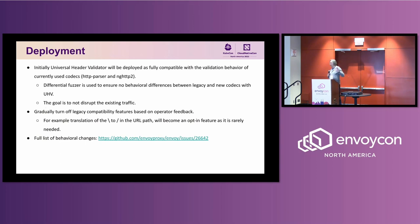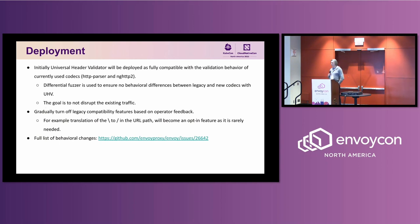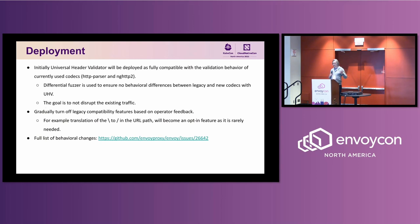We don't want to stay in that compatibility mode forever. Our goal is to move into a better, consistent, more compliant world. We'll start to turn off legacy features gradually. The way we're going to do it is to first evaluate the effects on traffic at some of the major Envoy operators. Probably some of those changes will be freebies, because nobody really relies on those legacy behaviors. Some of them may be more complicated. The full list of behavioral changes is currently in a GitHub issue, but we will surface them in the Envoy documentation, where it will be easy to see what we're planning to change.